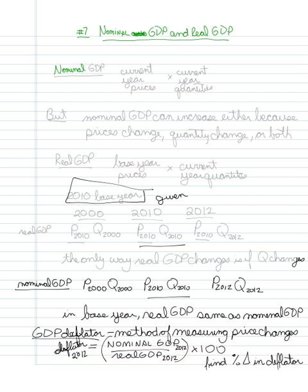So nominal GDP — the way that we measure it is we're taking current year prices for all the products in the country and multiplying them by current year quantities. But as you can see here, nominal GDP can increase either because prices change, quantities change, or both.